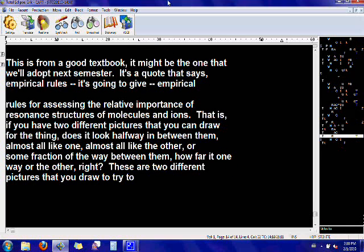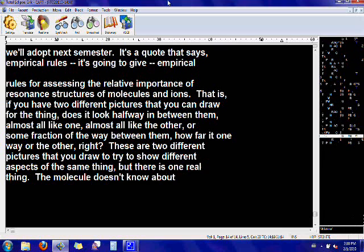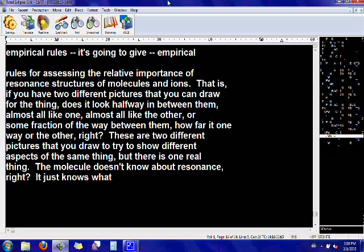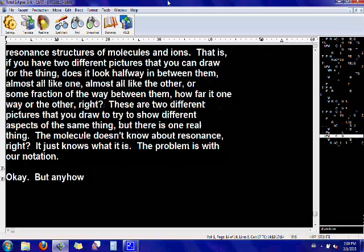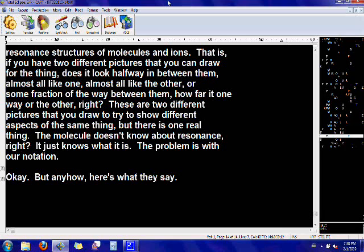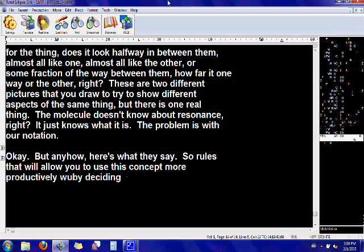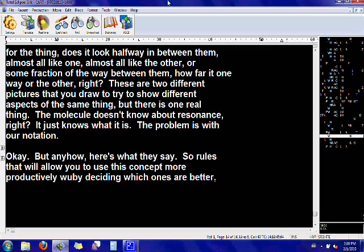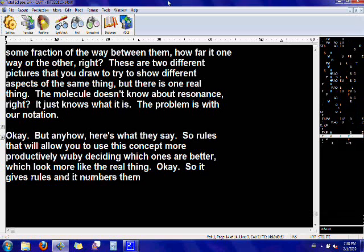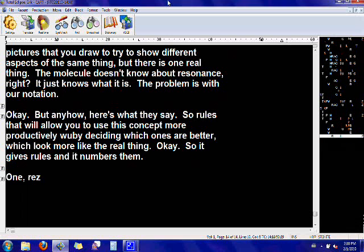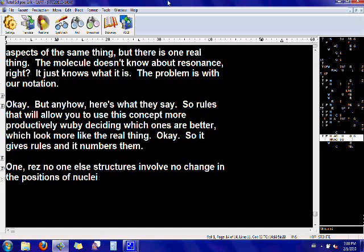These are two different pictures you draw to try to show different aspects of the same thing. But there is one real thing. The molecule doesn't know about resonance. It just knows what it is. The problem is with our notation. OK, but anyhow, here's what they say. Rules that will allow you to use this concept more productively by deciding which ones are better, which look more like the real thing. So it gives rules and it numbers them. One, resonant structures involve no change in the positions of nuclei. Only electron distribution is involved.